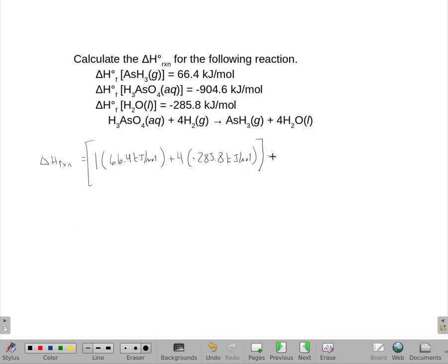We're going to subtract from that the heats of formation of all the reactants. So that's this H3AsO4, and there's just one of those, so that's one times negative 904.6.